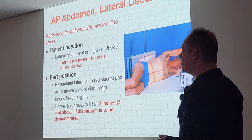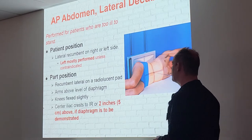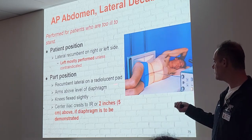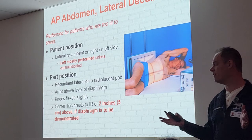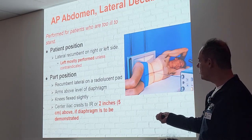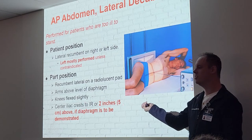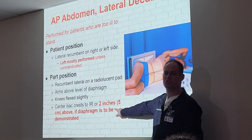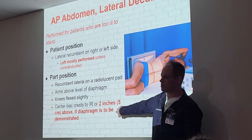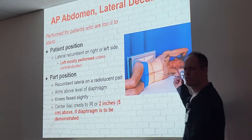For patient positioning, they're in an AP projection — laying on their side. Arms need to be above the head, above the level of the diaphragm. Flex the knees slightly; if the legs are straight out they'll wobble and rotate on you. Knees on top of each other keeps them secure. Centering is two inches above the iliac crests. Even though the book lists both options, two inches above is the one to focus on — that's what they ask on the exam.